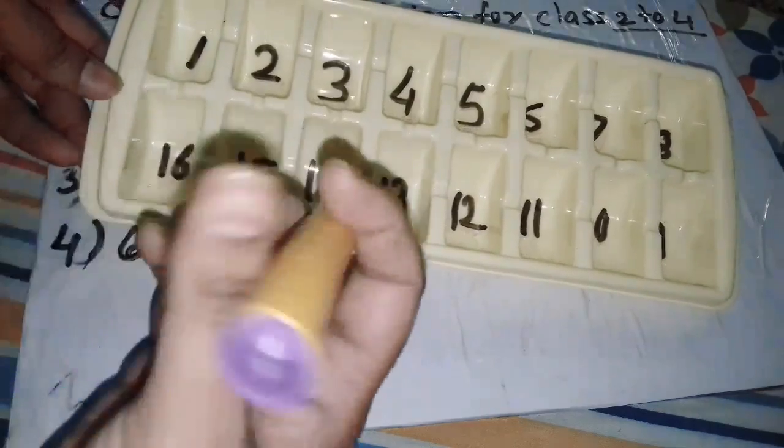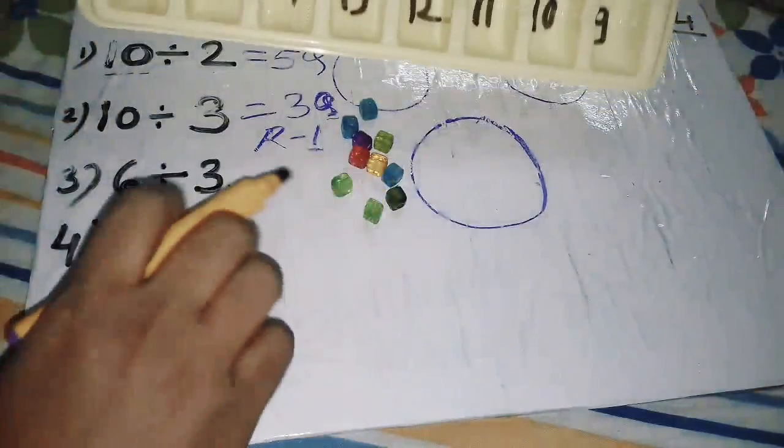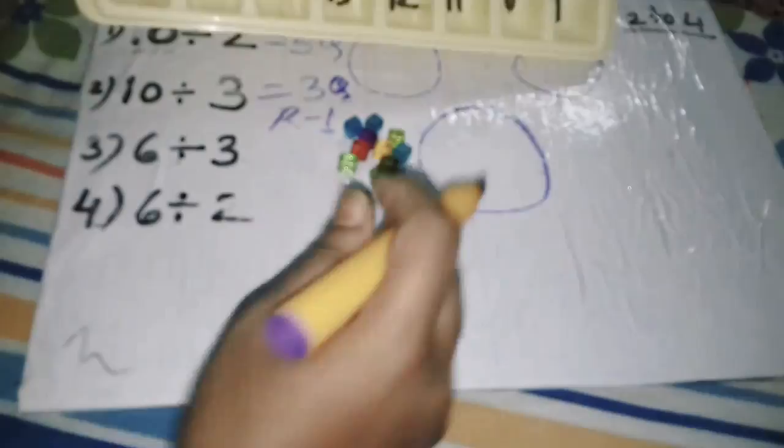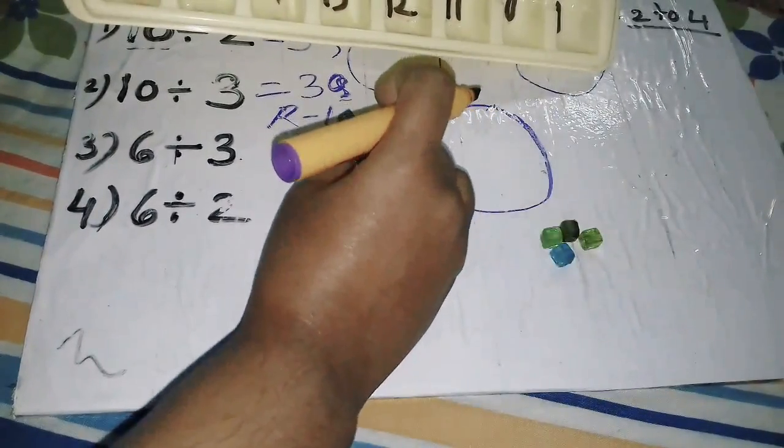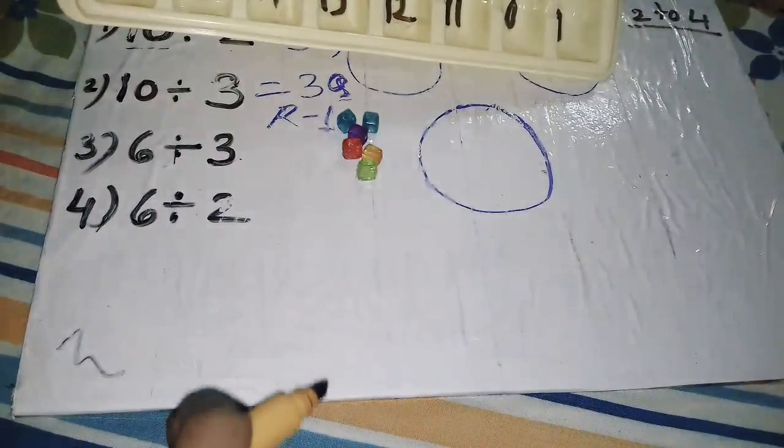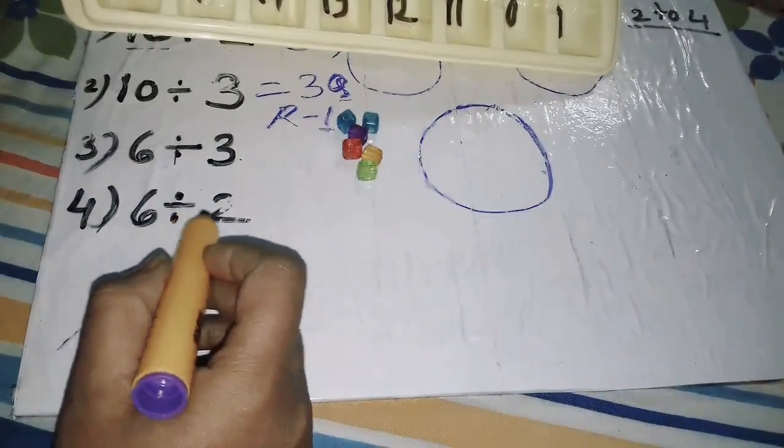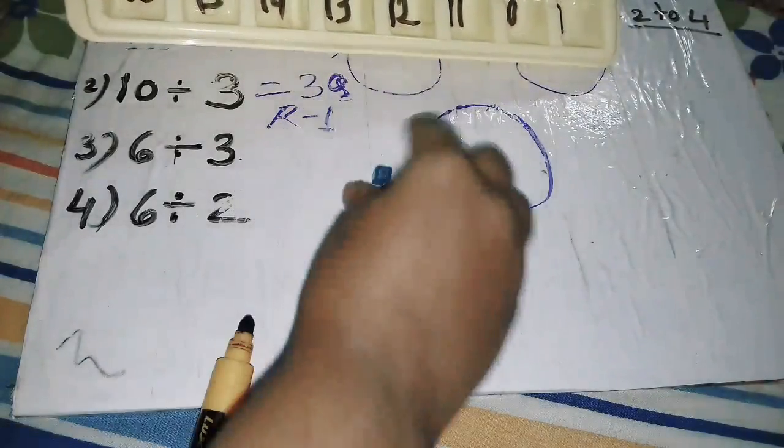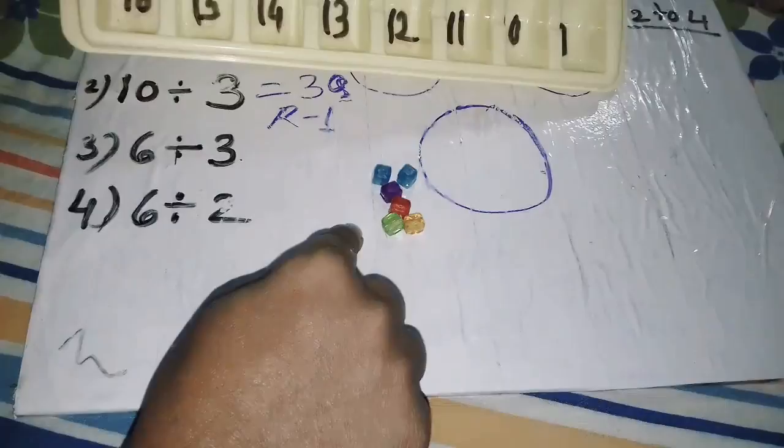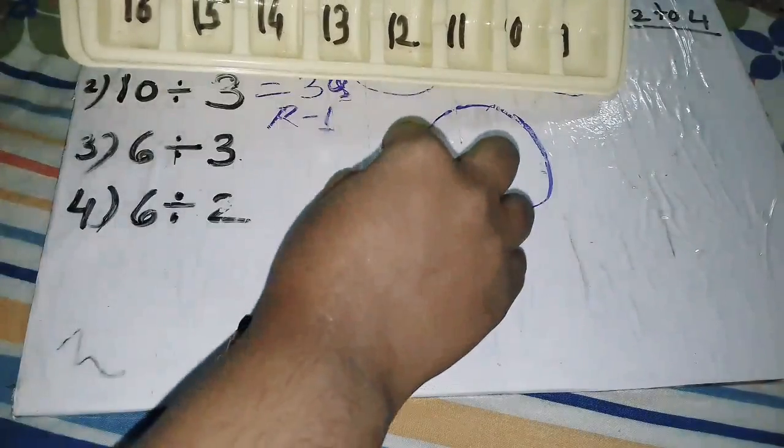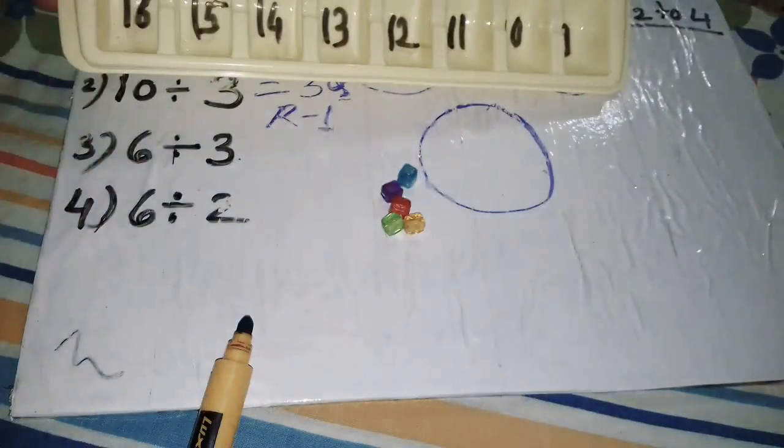Now 10 beads, so I will take 6 only first. These are 6 beads, so 4 will be removed. 6 divided by 2 means these 6 beads have to be divided by 2. I will start keeping 1, then 2. Only in 2 compartments we have to keep it.